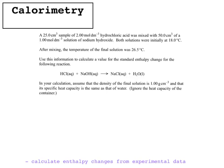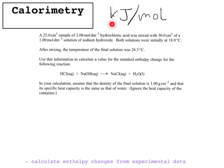A different type of question involves adding two solutions together and working out the enthalpy change. Here we're adding a 25 cm³ sample of 2 mol/dm³ hydrochloric acid and a 50 cm³ sample of 1 mol/dm³ sodium hydroxide. Both start at 18°C and the final temperature is 26.5°C. Remember, enthalpy change is in kilojoules per mole, so first work out kilojoules of energy given out, then moles reacting, and divide.